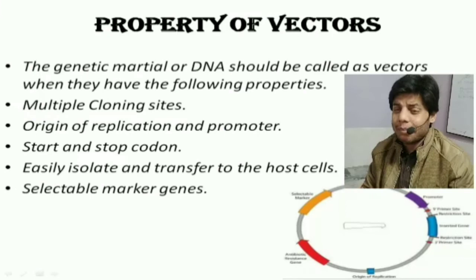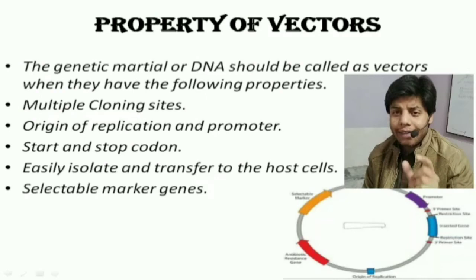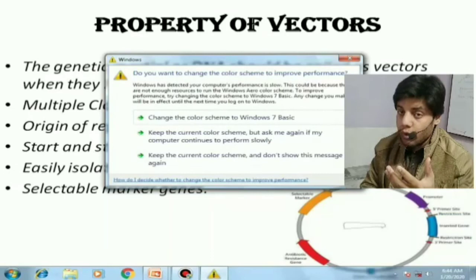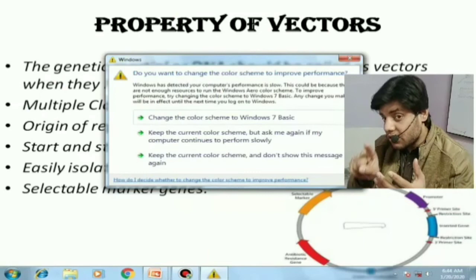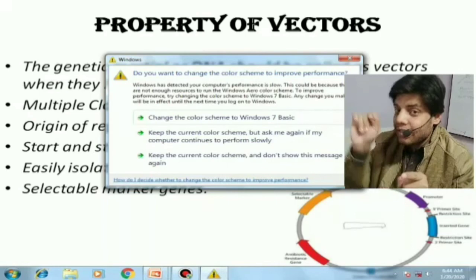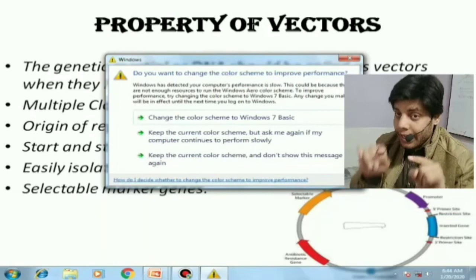اس کے علاوہ اس vector میں آپ کے پاس selectable markers بھی ہونے چاہئے۔ Selectable marker genes وہ antibiotic resistance genes ہوتے ہیں۔ جب آپ ایک vector کو ایک cell میں ڈالتے ہیں اور اس cell کو ایسے میڈیا میں grow کرتے ہیں جس میں antibiotic موجود ہو، تو وہ cell جس میں vector اور antibiotic resistance genes ہوں، آسانی سے grow کرے گی۔